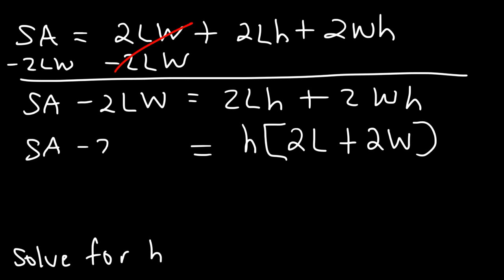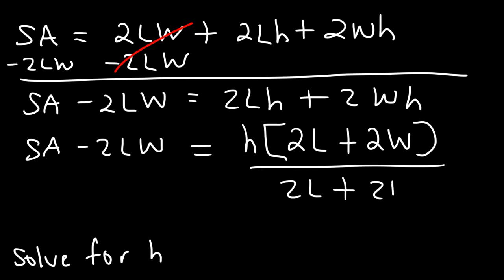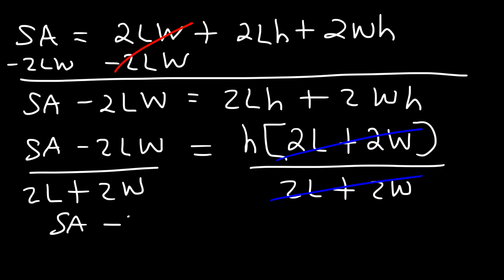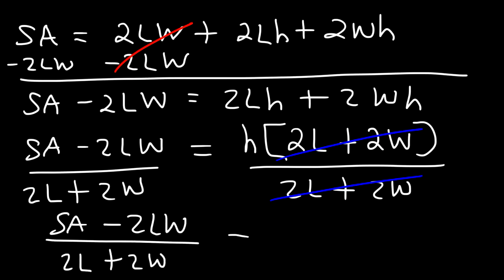So this is what I now have. The last thing I need to do is divide both sides by (2L plus 2W). Whatever you do to the right side, you must do to the left side for the equation to remain equal. So the surface area minus 2LW, divided by (2L plus 2W), equals the height of the rectangular prism. And that's the answer.